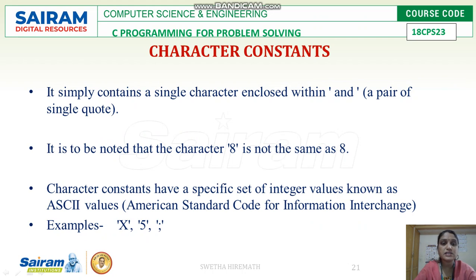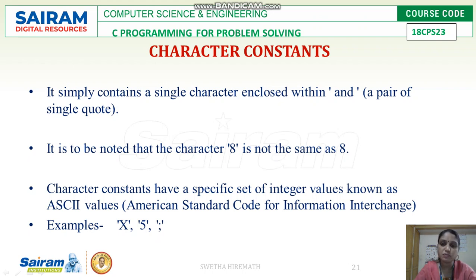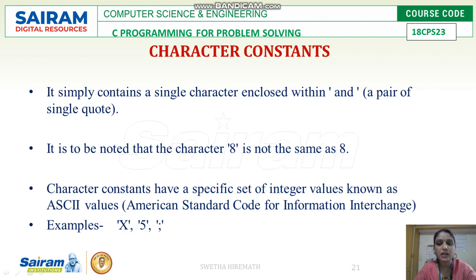Coming to character constants — a character constant contains a single character enclosed within single quotes. Whatever value is enclosed within single quotes — whether a character, a number, a special symbol, or a white space — is a character constant. Each character constant represents its corresponding ASCII value.